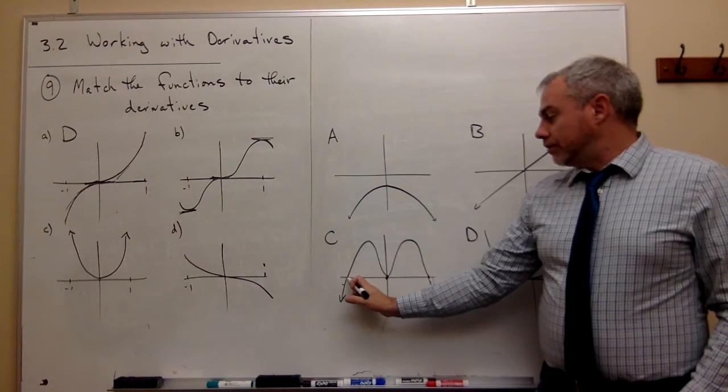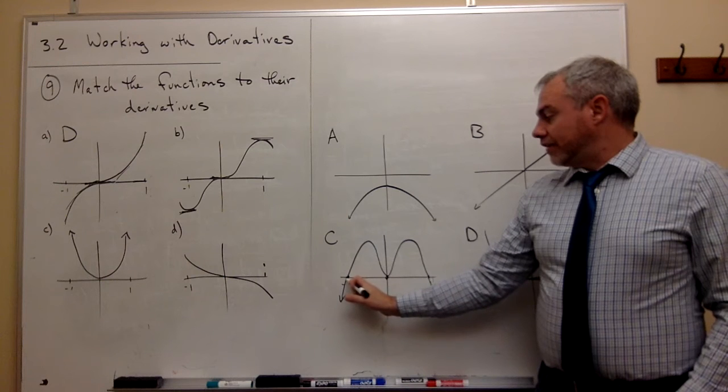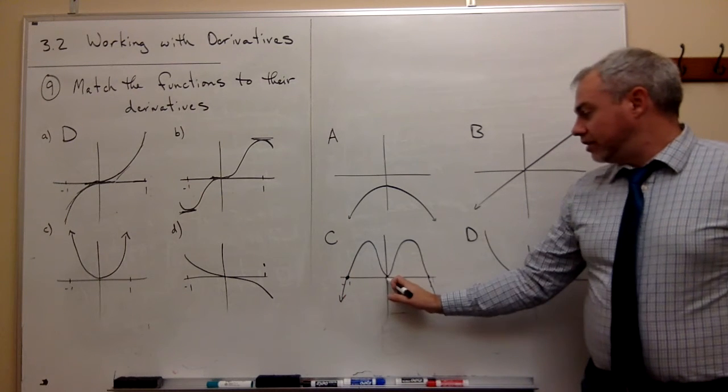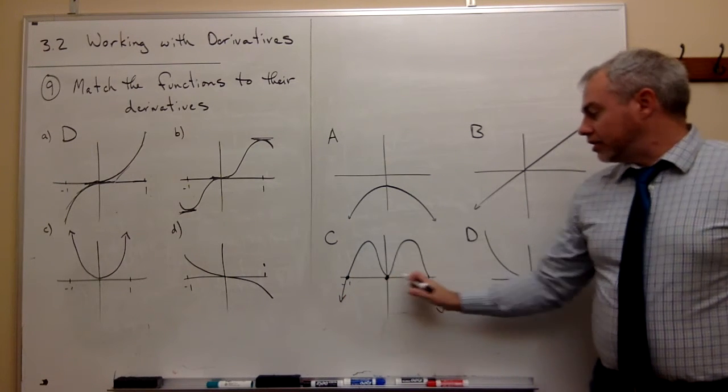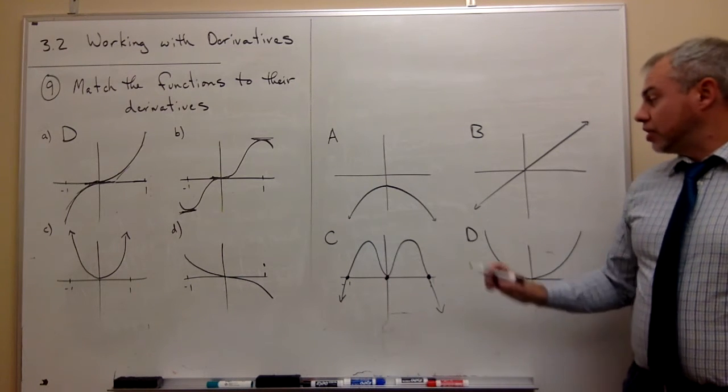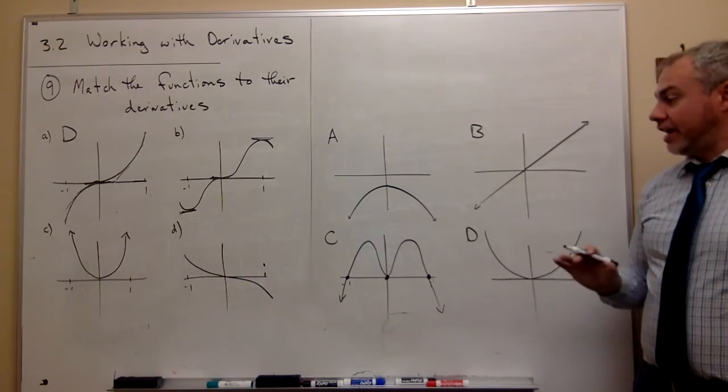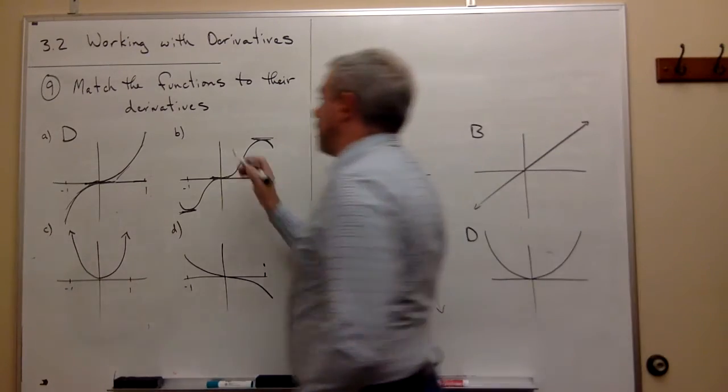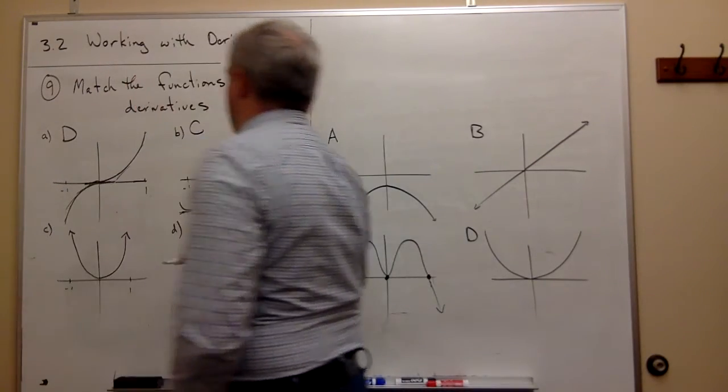Well, here, the slope, the derivative is zero at negative one, the derivative is zero, zero, and the derivative is zero at one. So all the other ones do not have that property. So b must be capital C.